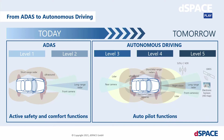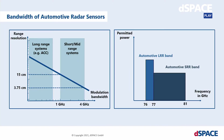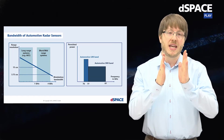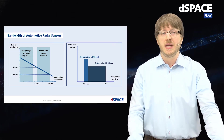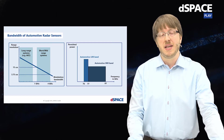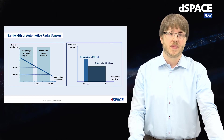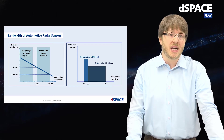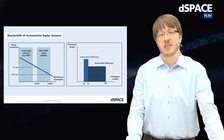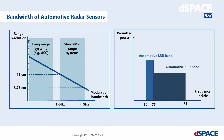One important requirement is the range resolution. This describes how far two targets can be in distance from each other and still be detected individually by the radar sensor. This has to be in the centimeter range for the most demanding autonomous driving functions. And to be able to do this, modern radar sensors need a larger and larger modulation bandwidth, because those two values are closely related.